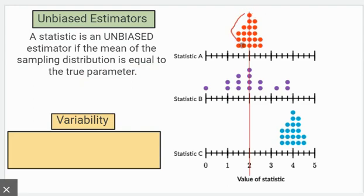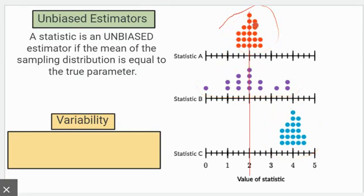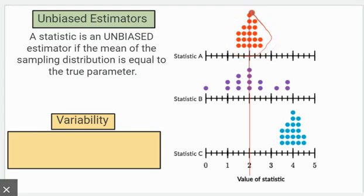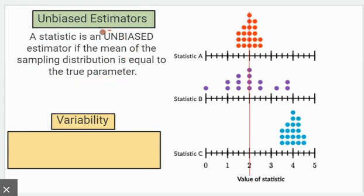These are all sampling distributions. It doesn't matter what the statistic is — these could be sample proportions, sample means, sample medians, or sample standard deviations. But if the mean of the sampling distribution is equal to the true parameter, whatever parameter it's trying to estimate, then we would say that statistic is unbiased.